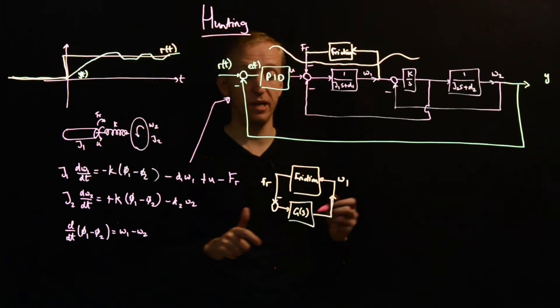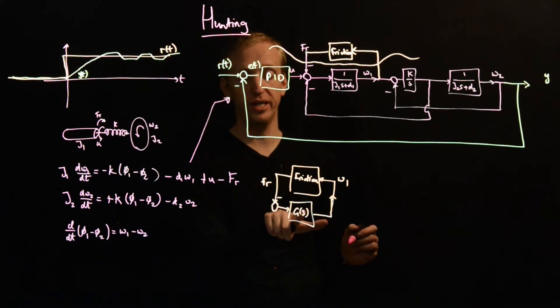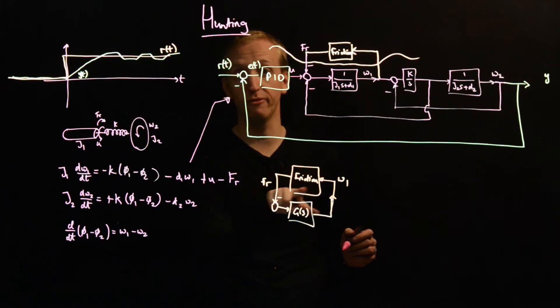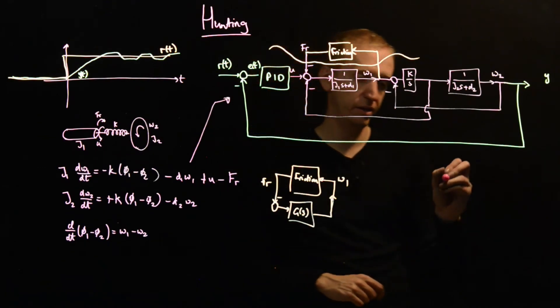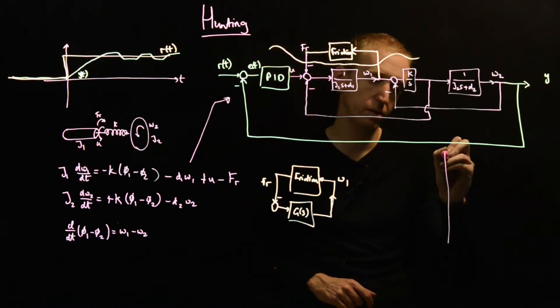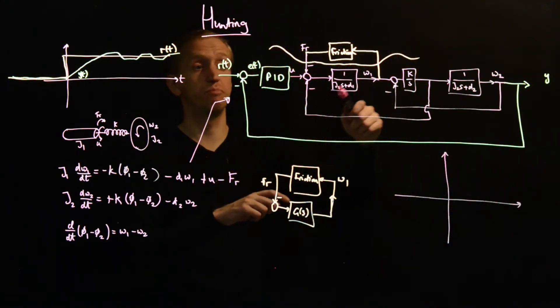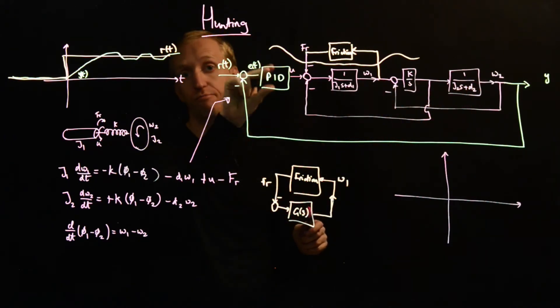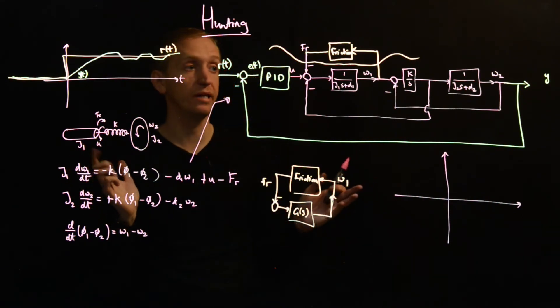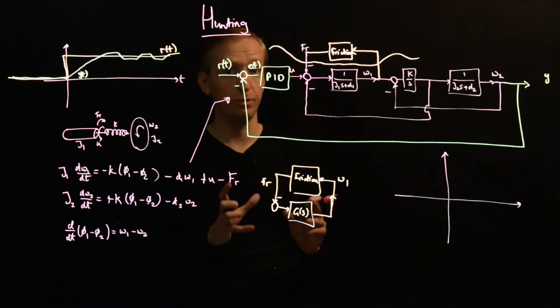So we know what to do. If we want to predict a limit cycle here, we plot the Nyquist diagram of G of s and we see if it intersects the describing function for our model of friction. So what might that look like? Well, what you will find, and you're very welcome to go away and do this for yourself, is maybe just set all of the parameters in the model here equal to one and try and design some kind of PID controller or whatever controller you like.